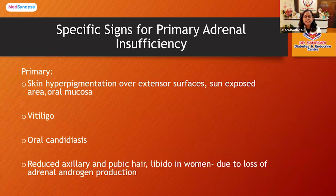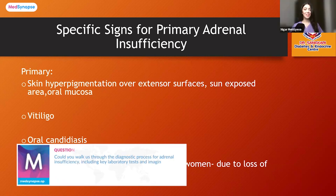In patients with primary adrenal insufficiency, there are specific symptoms that help delineate it from secondary causes. These patients have skin hyperpigmentation over extensor surfaces, sun-exposed areas, or the oral mucosa. Other patients may have vitiligo, oral candidiasis, and in some women there can be reduced axillary and pubic hair or decreased libido. Thank you so much, Dr. Siva Shankari, for that brief introduction and for outlining the variations between primary and secondary forms.